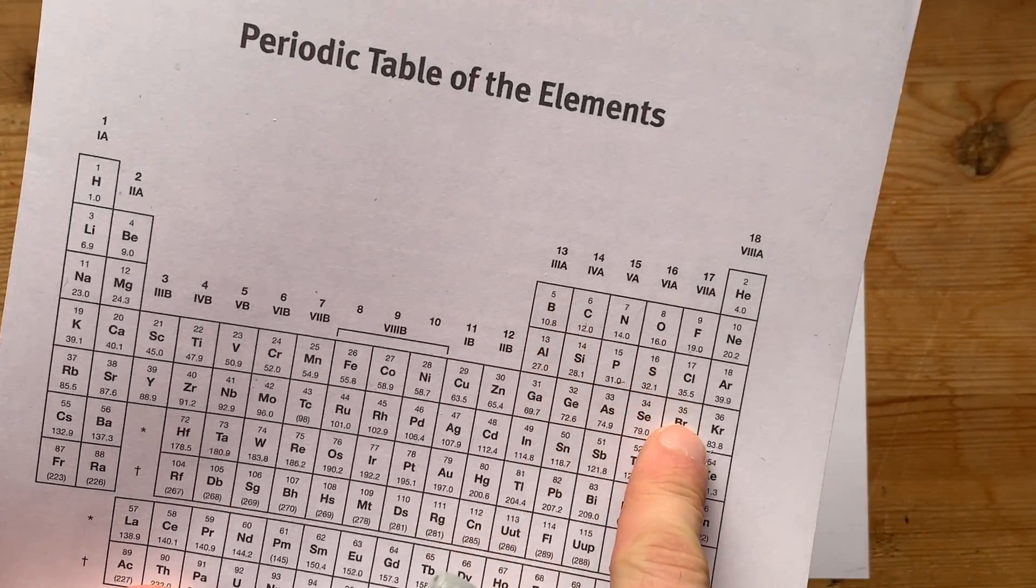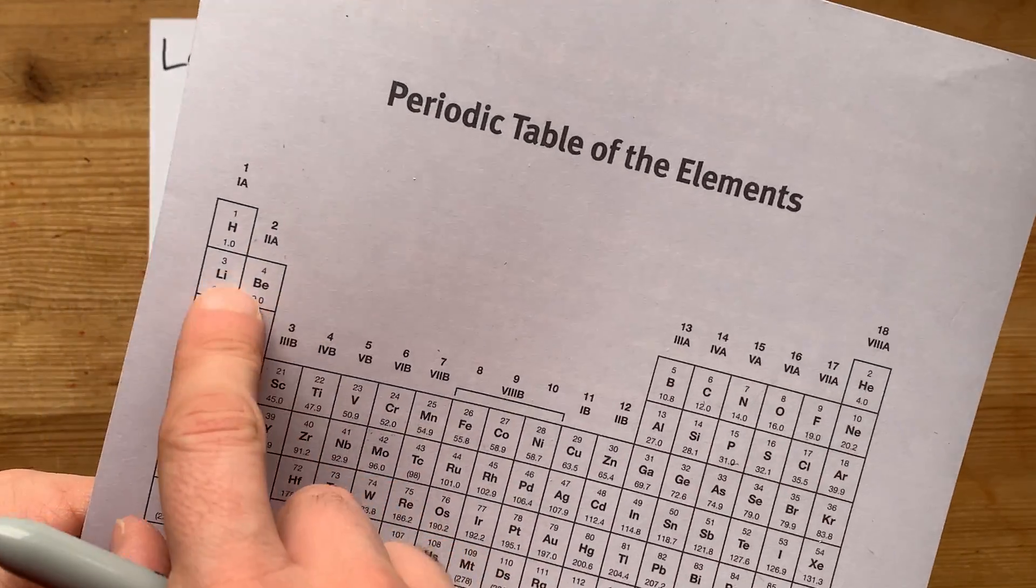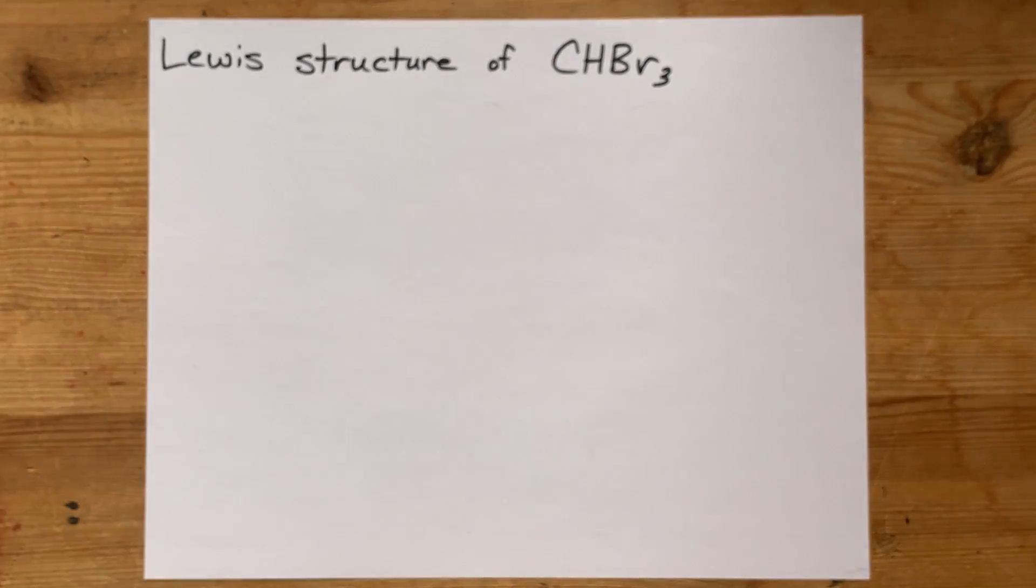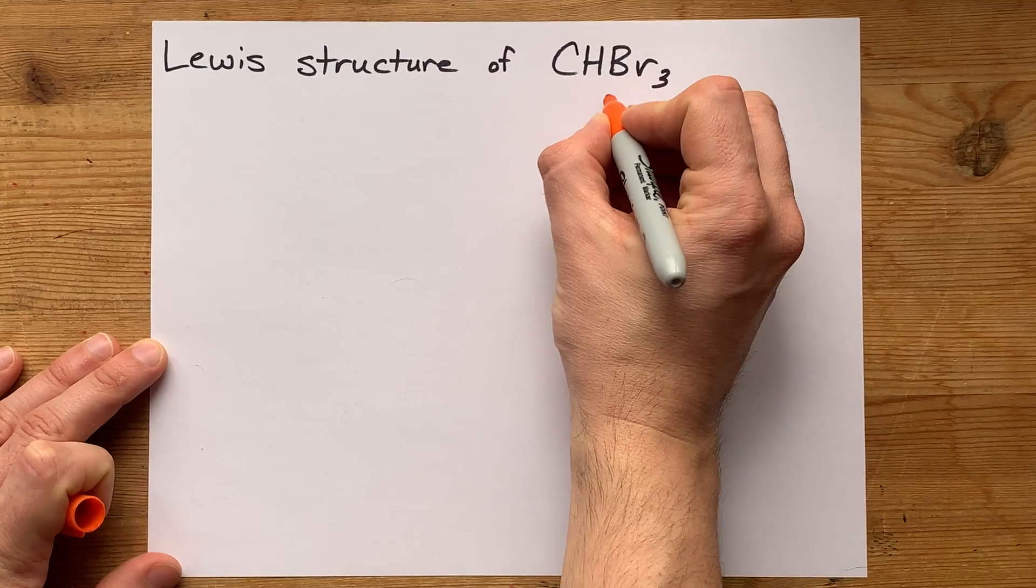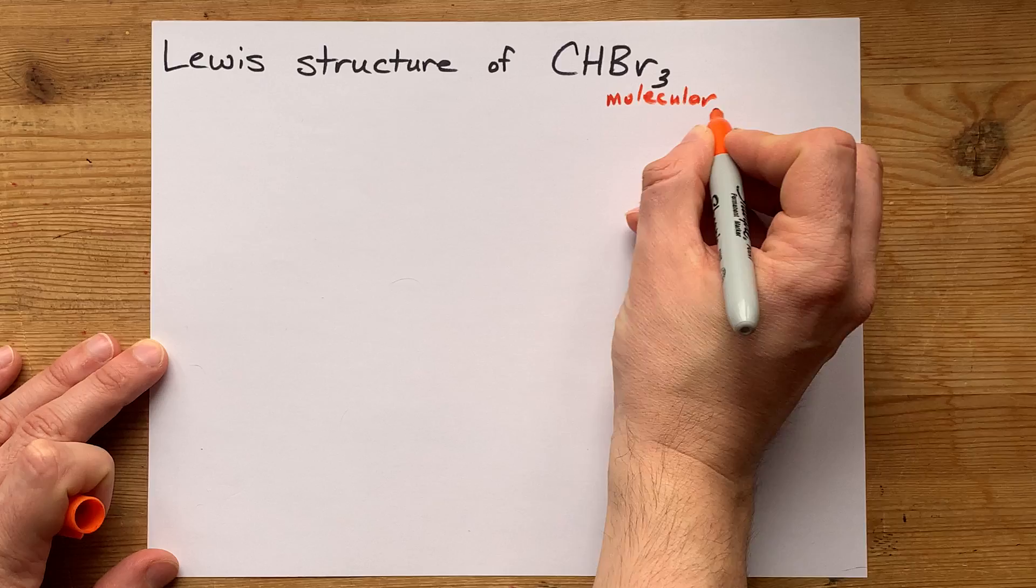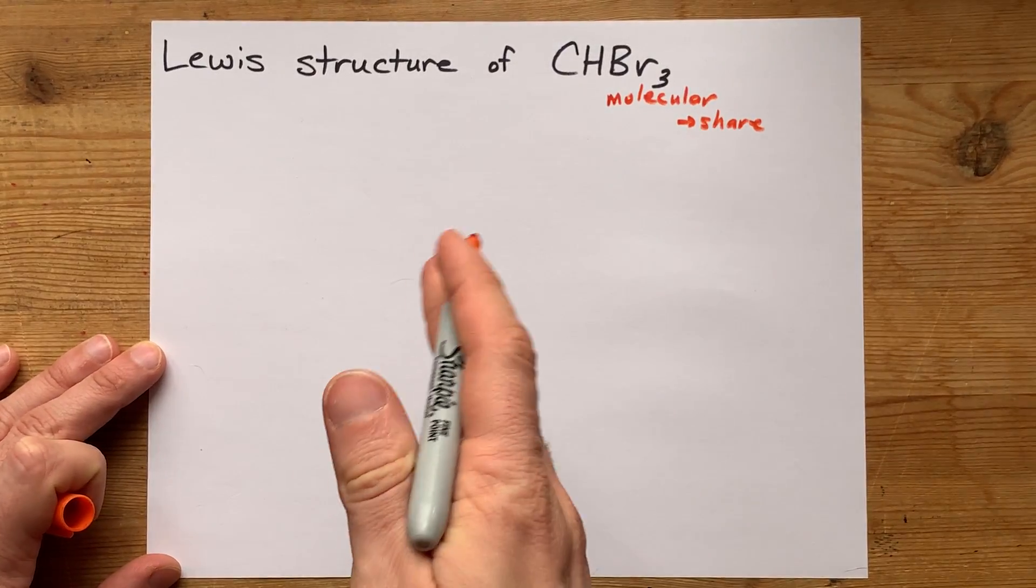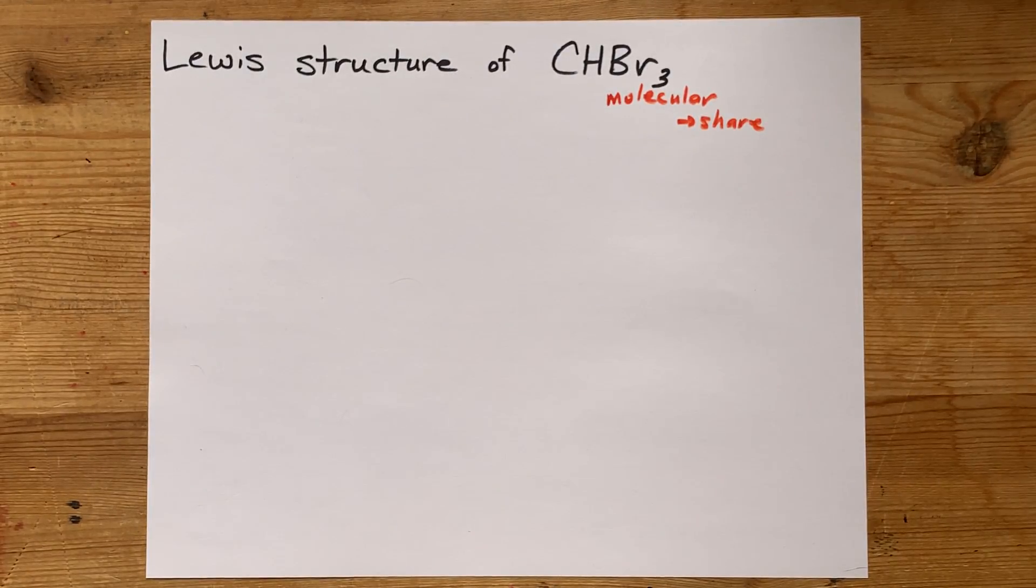Carbon and bromine are both clearly non-metals from the right side of the periodic table. Hydrogen is also a non-metal, even though it's written on the metal side - that's just a quirk of the periodic table. That means these are all non-metals, and when they combine, they'll form a molecular compound. This means there's going to be a sharing of electrons, as opposed to a transfer of electrons like you get in an ionic compound.